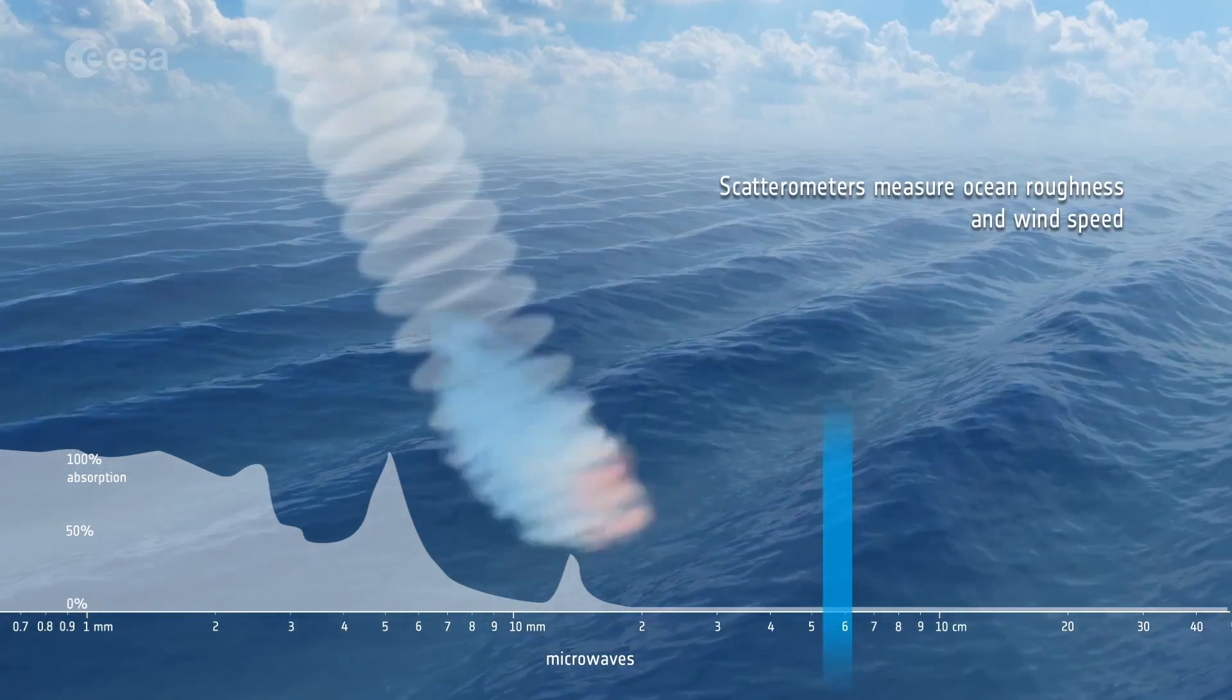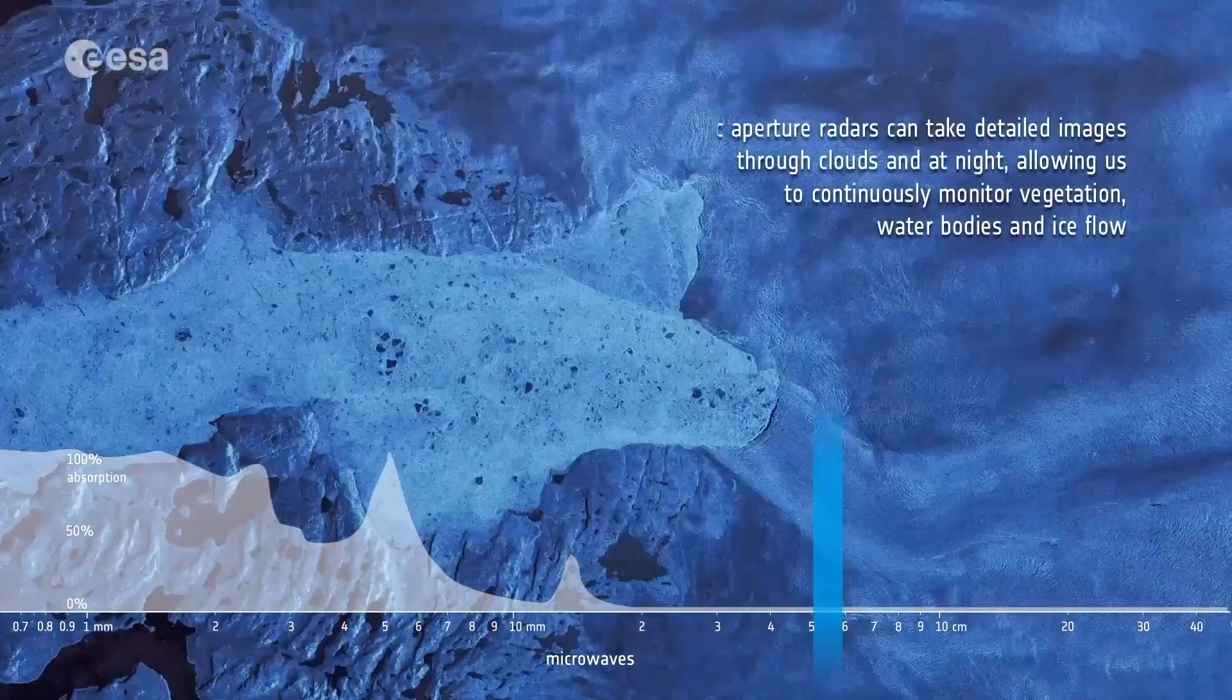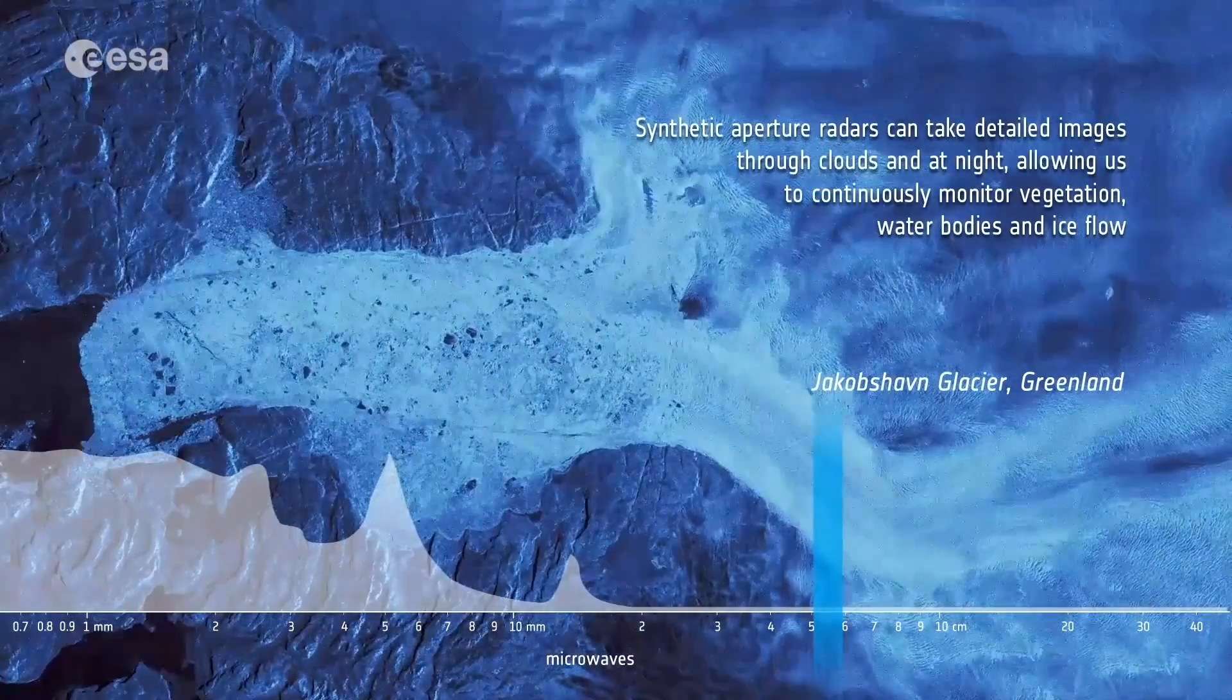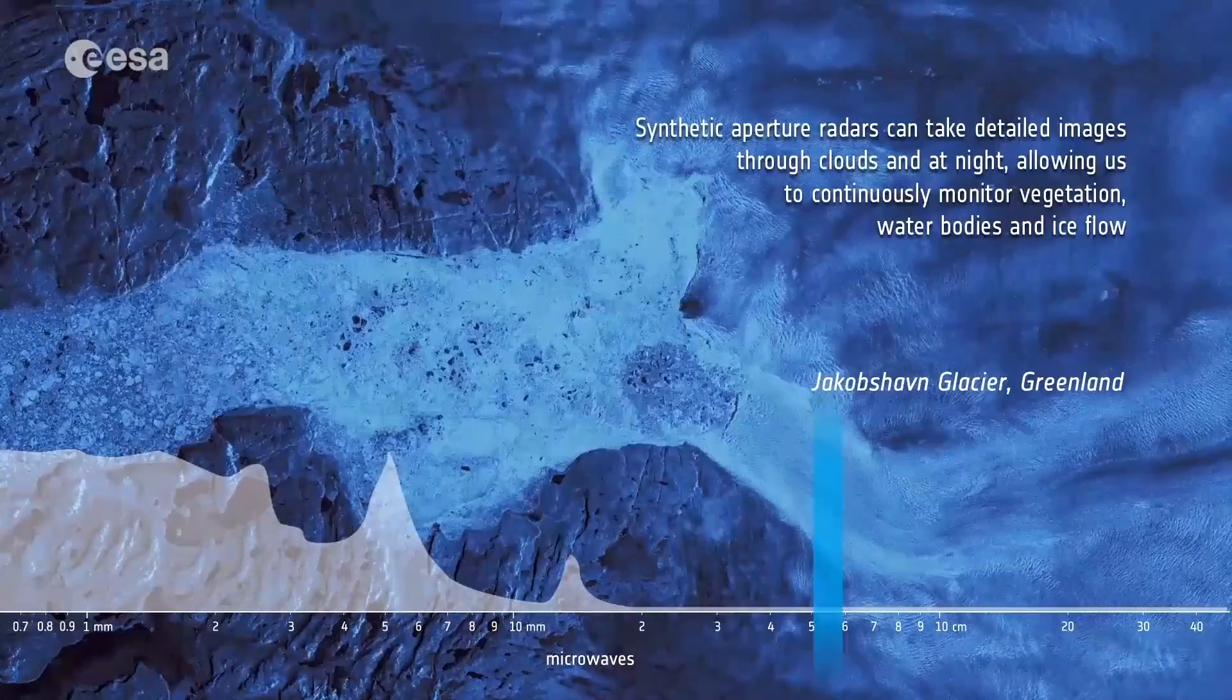Scatterometers measure ocean roughness and wind speed. Synthetic aperture radars can take detailed images through clouds and at night, allowing us to continuously monitor vegetation, water bodies and ice flow.